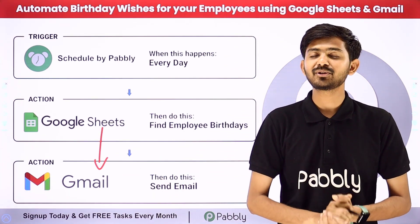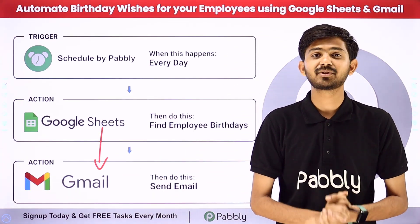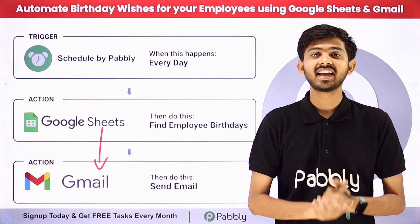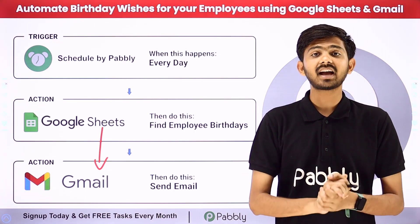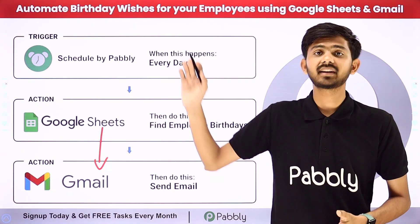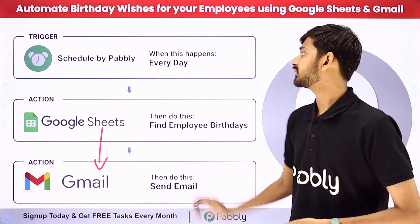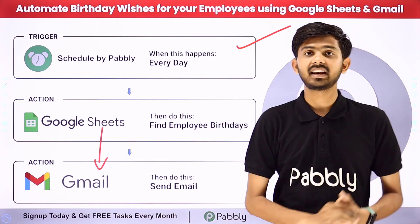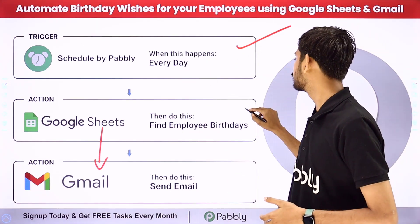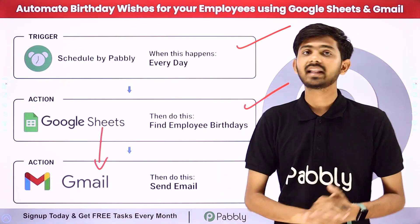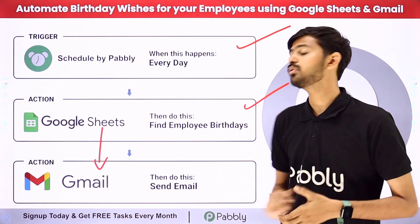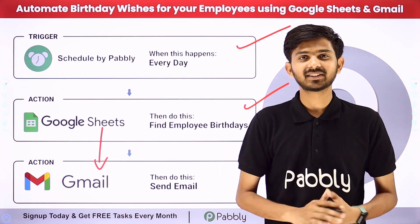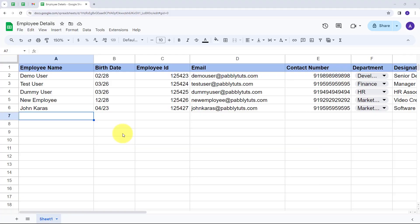For building this connection I'm going to use Pabbly Connect, which is an amazing software for automation and integration. In Pabbly Connect I have to use trigger and actions. In the trigger application I'm going to use Schedule by Pabbly, and in the action application first I'm going to use Google Sheets and then Gmail. Now let me take you to my computer screen.